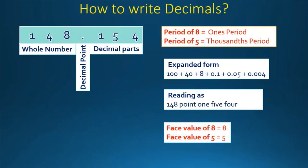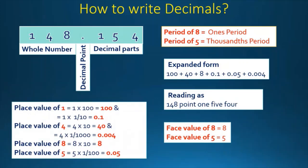Now let's find the place value of 8 and 5. The place value of 8 in the whole number part is equal to 8, and the place value of 5 is also equal to 5. Now let's look at numbers which are repeated — 1 appears twice, once in the whole number part and once in the decimal part, and 4 also appears twice. The place value of 1 in the whole number part is 1 times 100, which equals 100. The place value of 1 in the decimal part is 1 by 10, which equals 0.1.